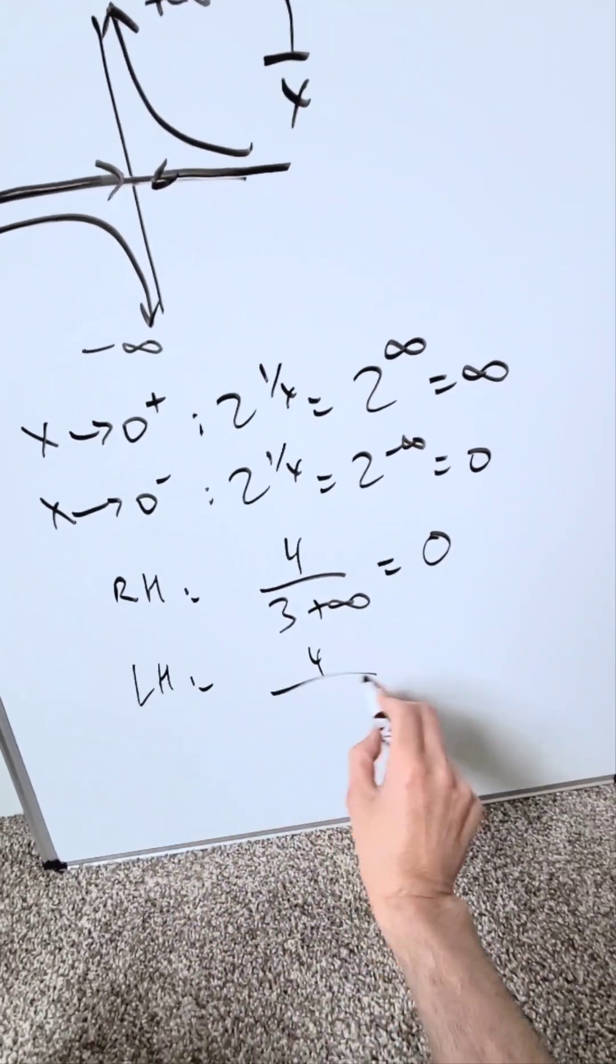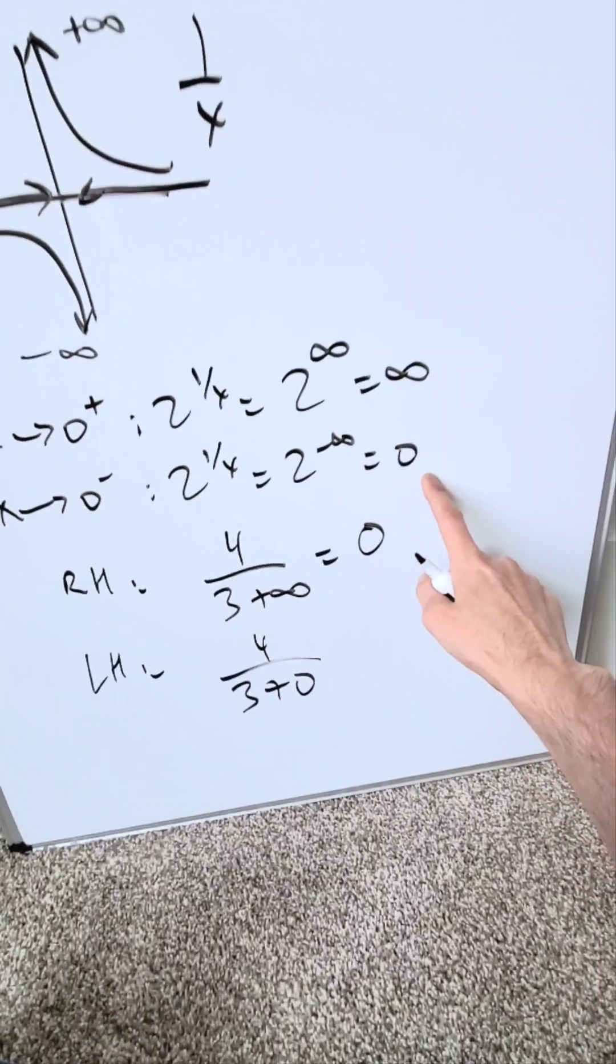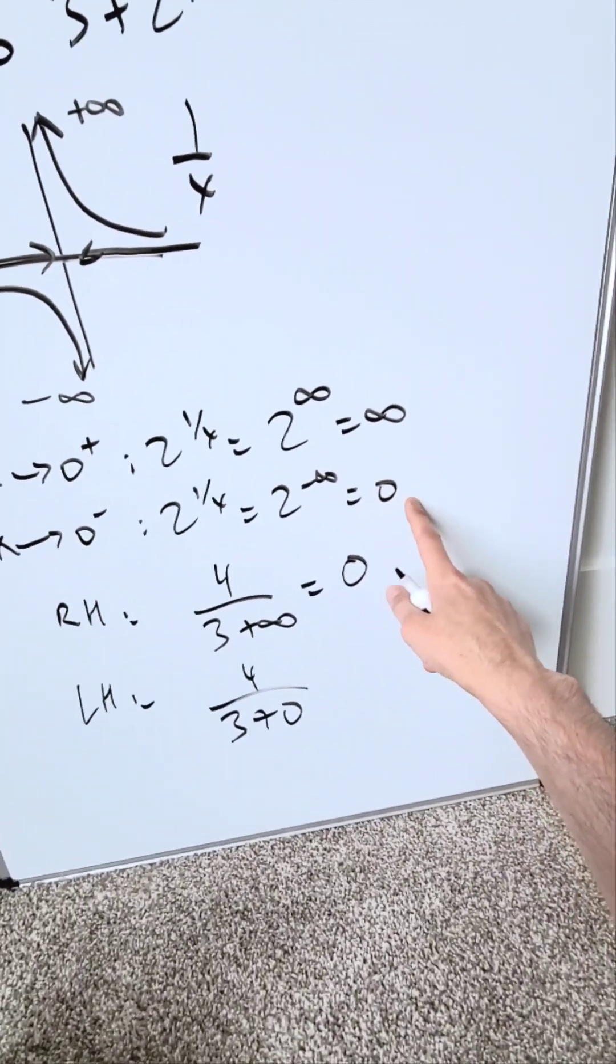From the left hand side, I have 4 divided by 3 plus 0, because I have 0 coming in in place of that 2 exponent 1 over x. And this will be equal to 4 over 3.